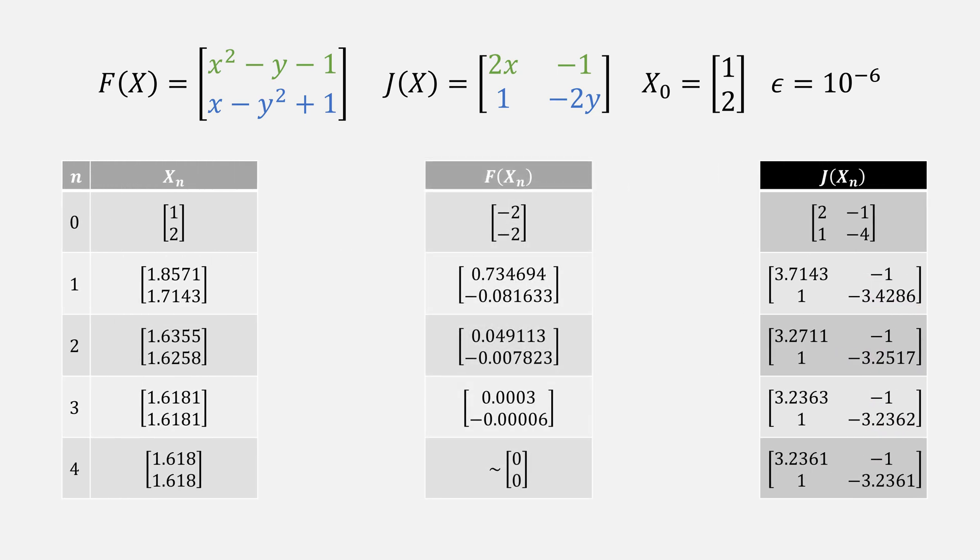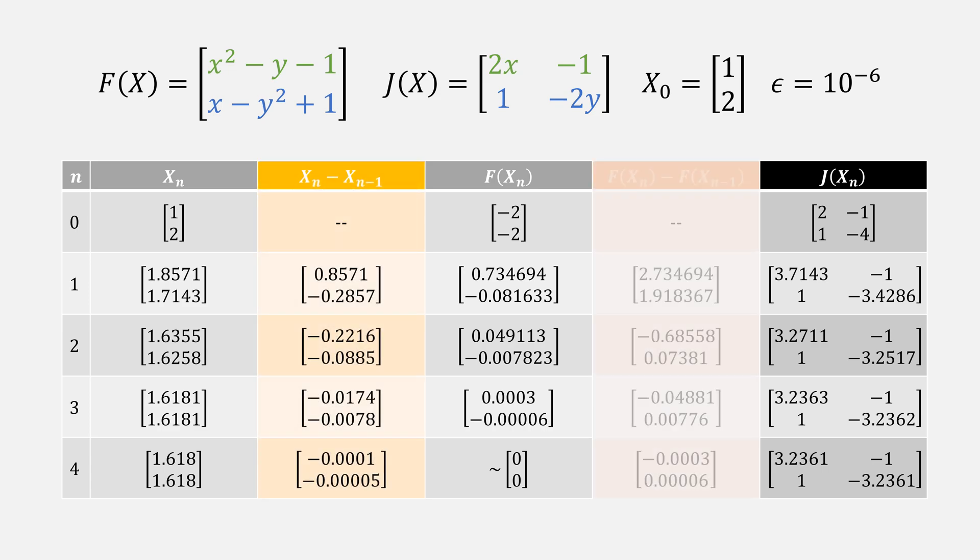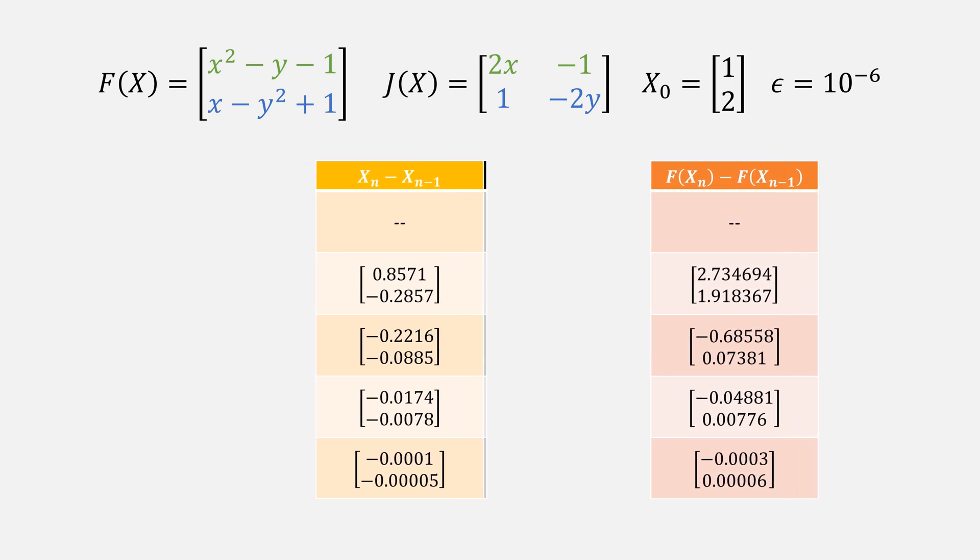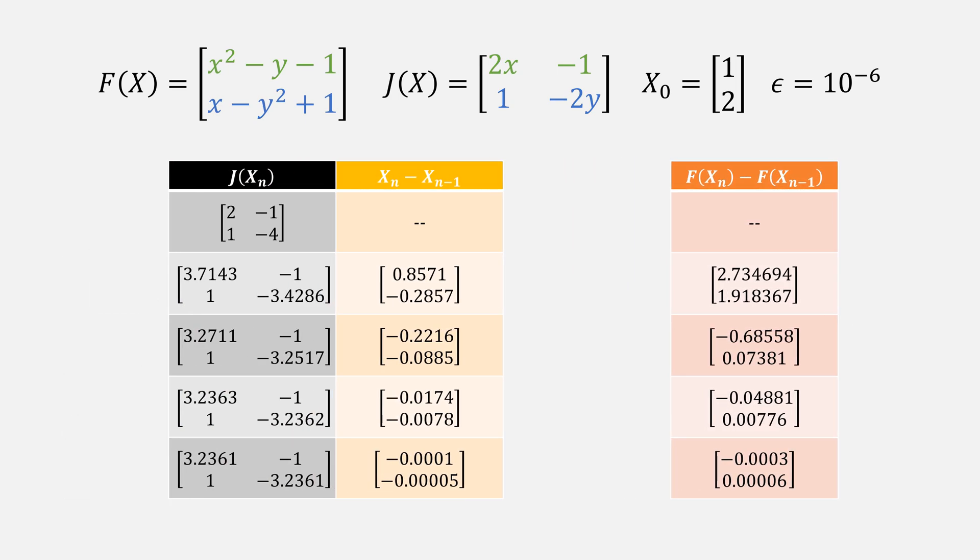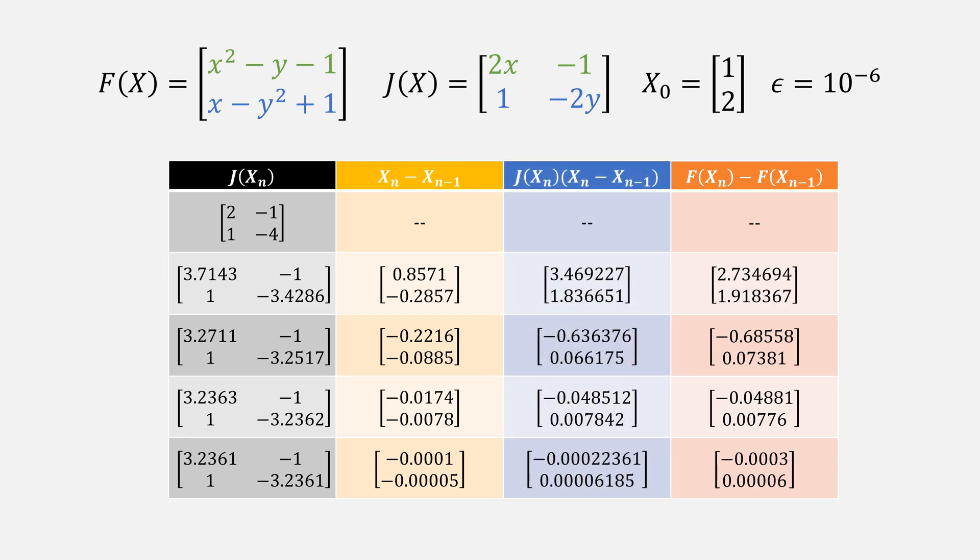Let's add back in the column for f, then take the differences between each x and each f. If you multiply the Jacobian against that change in x, we get this result, which matches very closely with our change in f. This is what Broyden noticed.